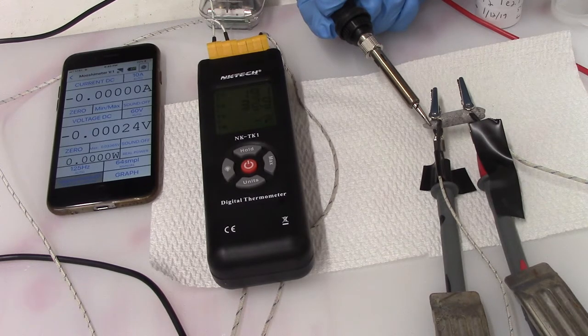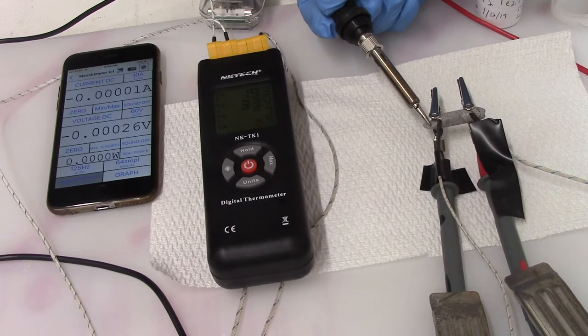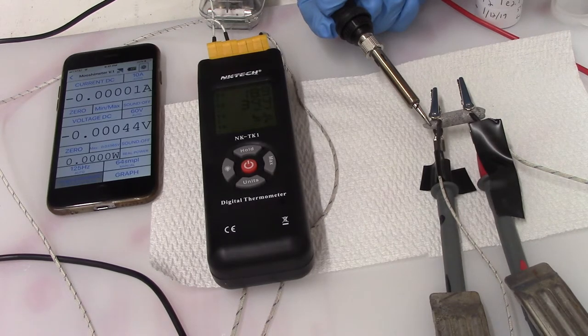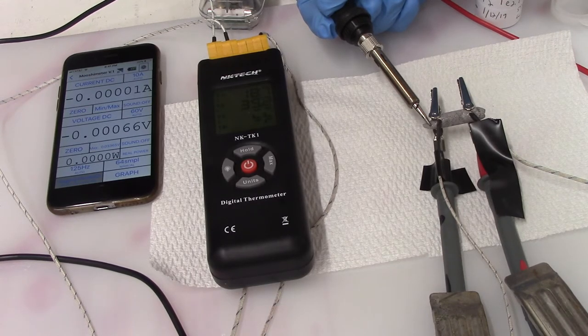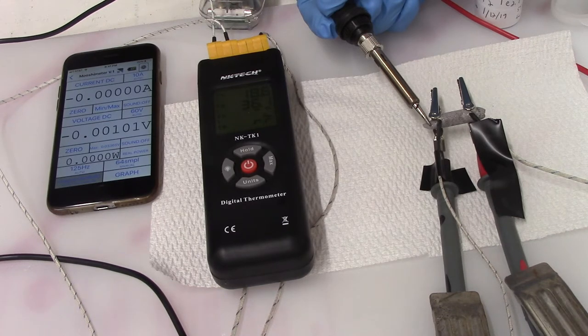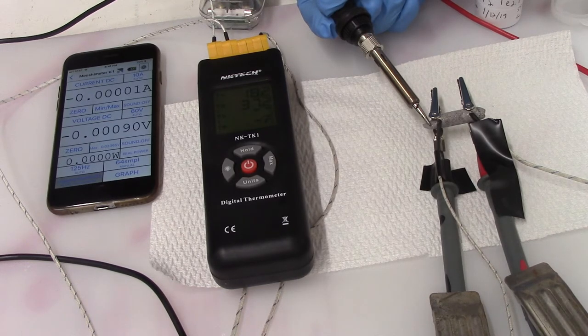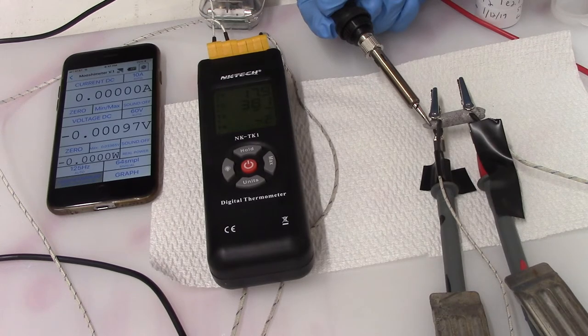So now we're at a negative two ten-thousandths. We only have a ten-degree difference there. And negative one millivolt—there we go. So that's about a twenty-degree difference.